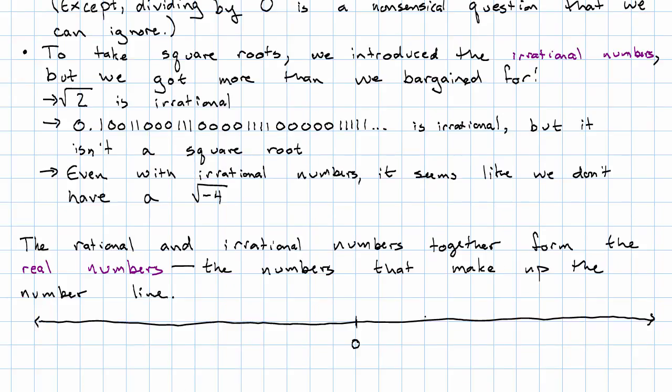We've got 0 in the middle. And then over here we have the positive numbers. And over here we have the negative numbers. We filled in some fractions, for example, here we have the fraction negative 2 thirds.